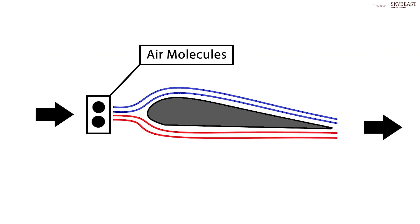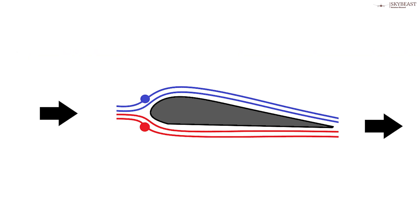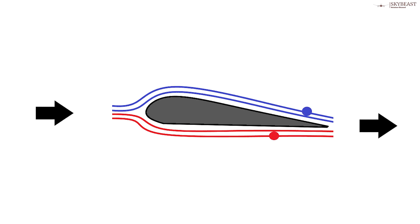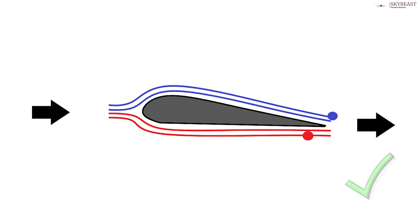Imagine two air molecules arriving at the front of the wing and separating, so one shoots up over the top and the other whistles straight under the bottom. There's no reason why those two molecules have to arrive at exactly the same time at the back end of the wing. They could meet up with other air molecules instead.